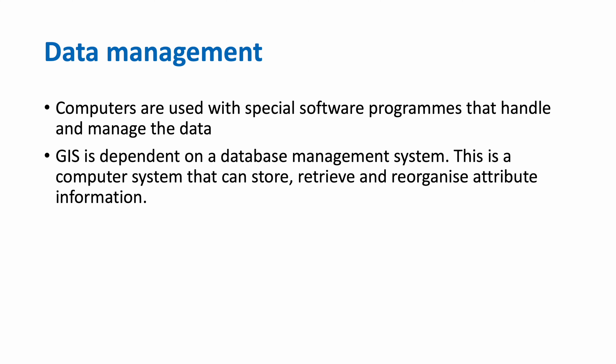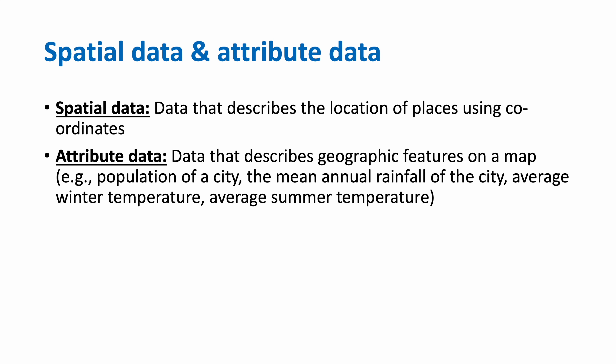Let's also look at data management. Computers are used with special software programs that handle and manage the data — a computer system that can store, retrieve, and reorganize attribute information. Spatial data is data that describes the location of places using coordinates. Attribute data is data that describes geographic features on a map, for example the population of a city, the mean annual rainfall, average winter temperature, or average summer temperature.